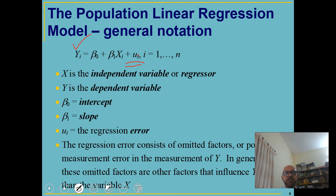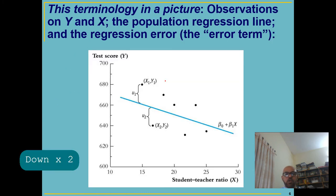X is called the regressor, predictor, explanatory variable, or independent variable. Y is called the dependent variable, predictand, regressand, response variable, or outcome variable. Beta 0 is called the intercept, and we'll discuss why we should avoid interpreting it the way we do in mathematics. Beta 1 is your slope and u_i is your error term.